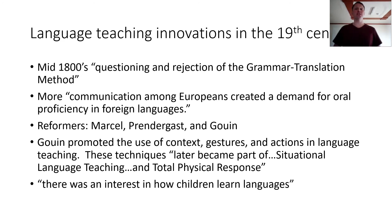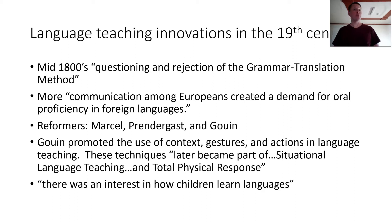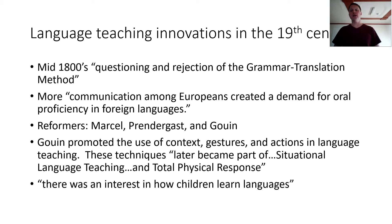Language teaching innovations in the 19th century, or the 1800s: in the mid-1800s, people started questioning and rejecting the grammar translation method. More communication among Europeans created a demand for oral proficiency in foreign languages. Some of the reformers were Marcel, Prendergast, and Gouin. Gouin promoted the use of context, gestures, and actions in language teaching. These techniques later became part of situational language teaching and total physical response, TPR. There was also an interest in how children learn languages.